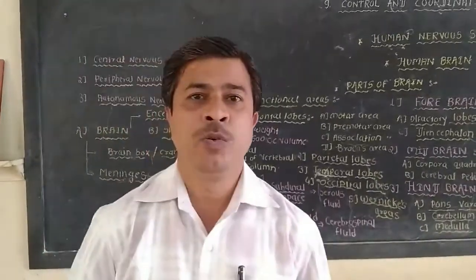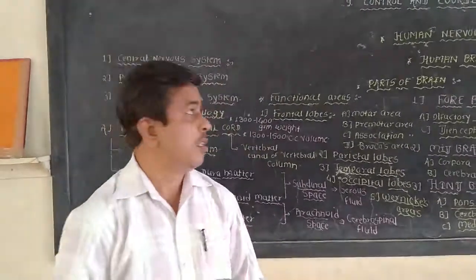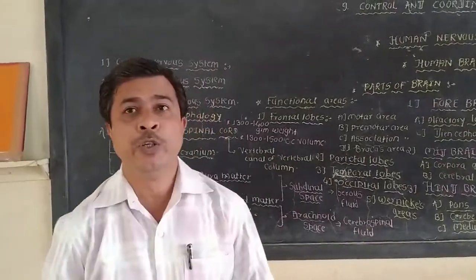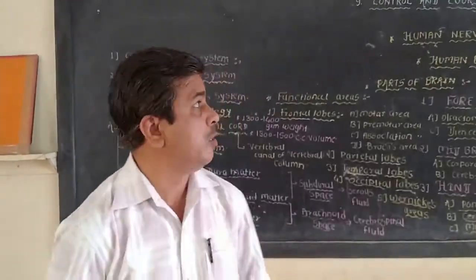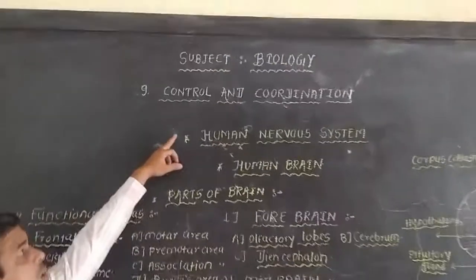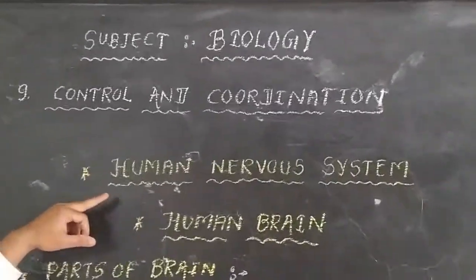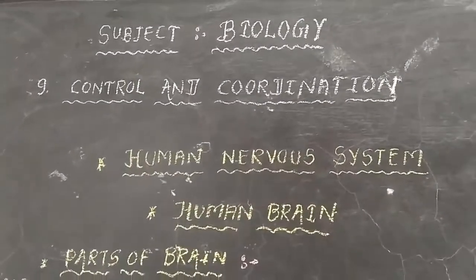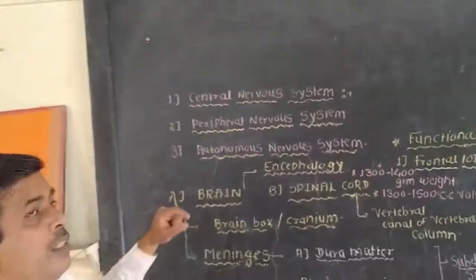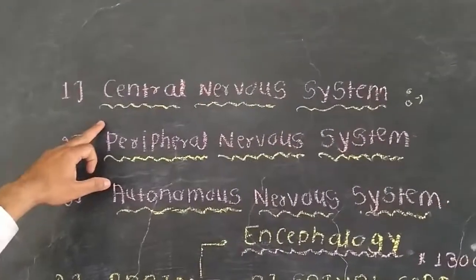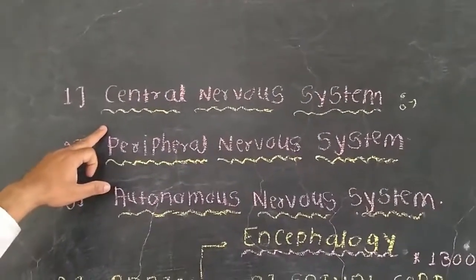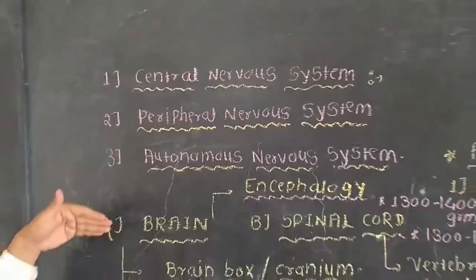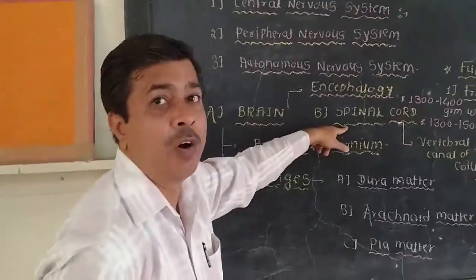Good morning friends. Today we will discuss the structure of the human brain from the chapter on control and coordination, from the human nervous system. The human nervous system consists of mainly three parts. The first is the central nervous system, which itself consists of two parts: the brain and the spinal cord.